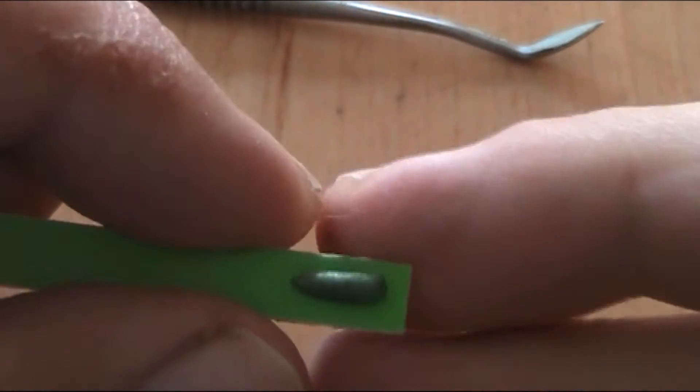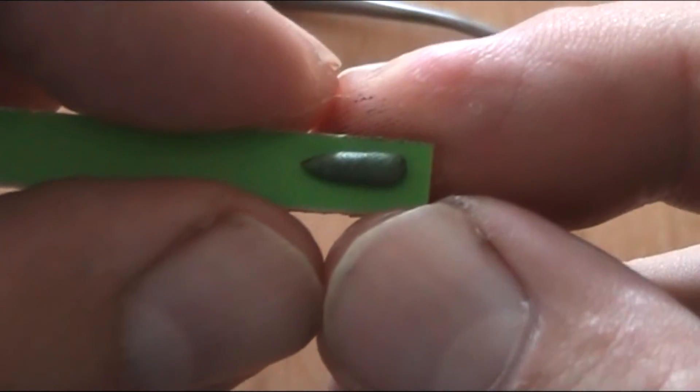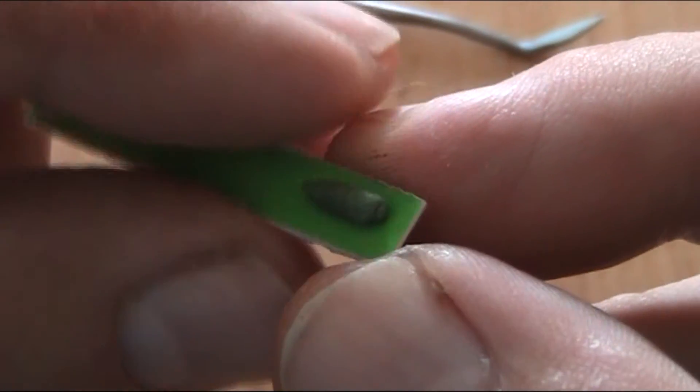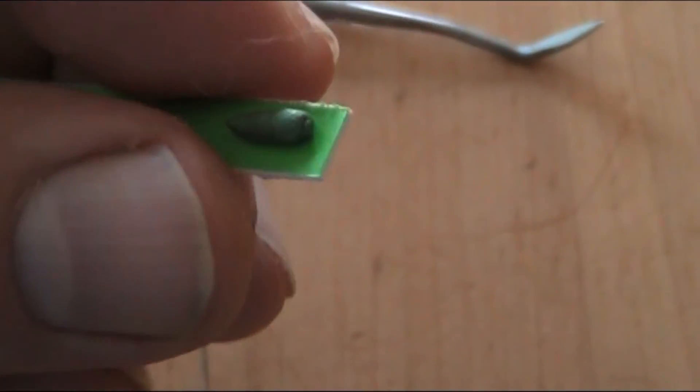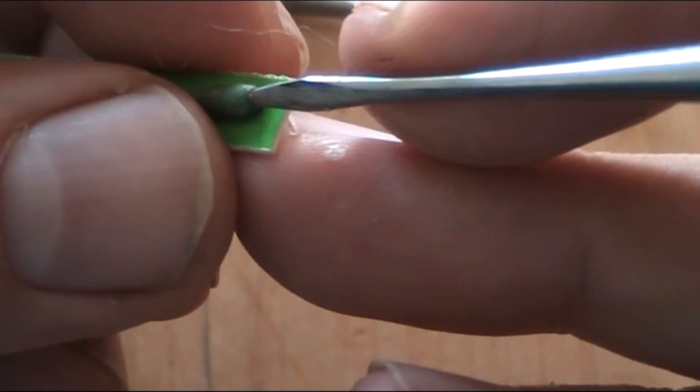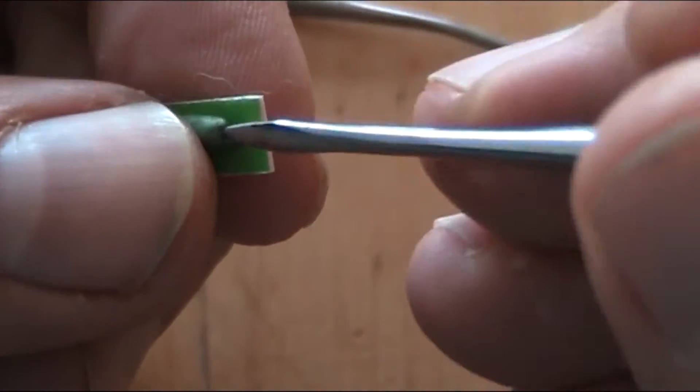To sculpt the little maggots or worms, I roll a small green stuff snake and use my sculpting tool to poke a little hole in the front. You can also make this with a needle.